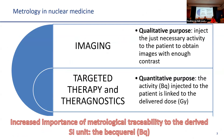To make an image, the medical practitioner injects the just necessary activity to the patient in order to obtain images with enough contrast. So it's a qualitative purpose and it's quite important to have a good traceability chain for that, a good trust on the activity measurement.